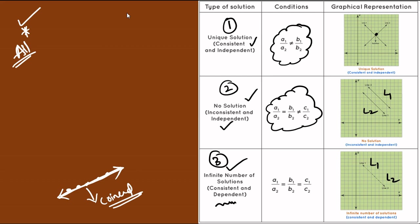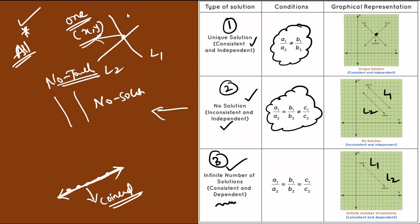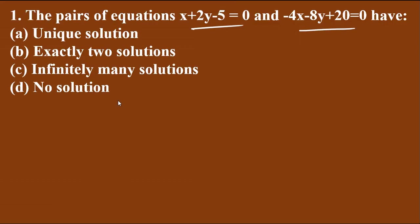To review: case one — two lines intersecting at one point, giving a unique solution with only one point (x, y). Case two — two parallel lines not touching each other, so there is no solution. Case three — coincident lines giving infinitely many solutions. These three concepts will help us crack all the bits in this chapter.